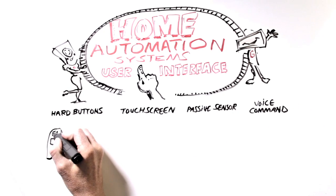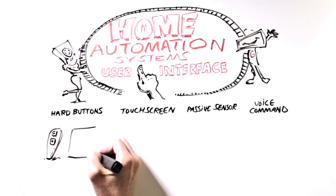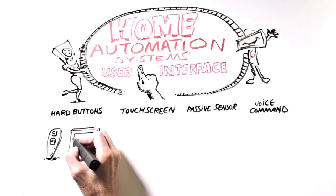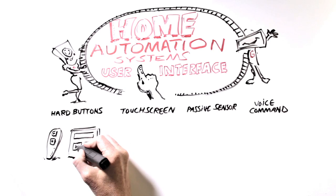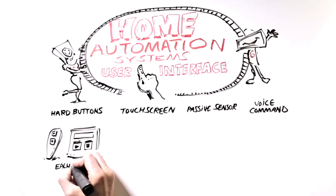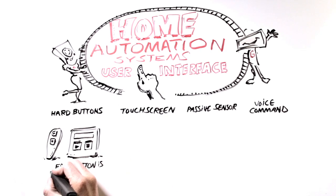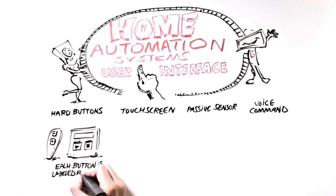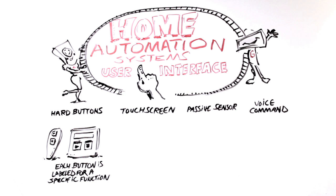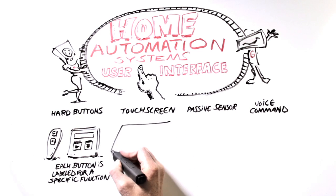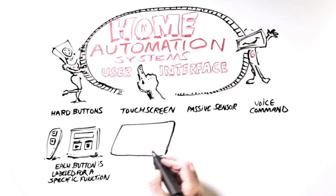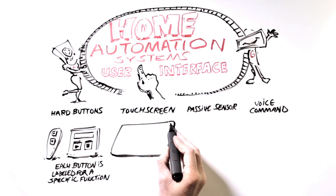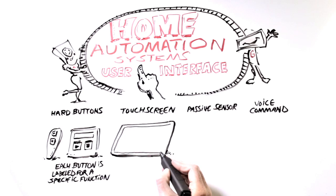Hard button user interfaces are found on handheld remotes and keypads. Each push button is labeled for a specific function. We call these hard buttons, as opposed to the virtual or soft buttons we find on touch screens.